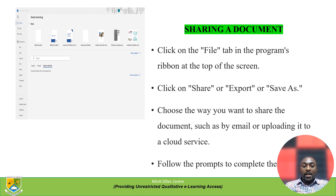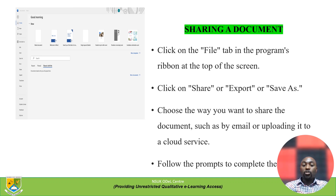To share a document, click on the File tab in the program's ribbon at the top of the screen, navigate to Share, and click on Share or Export, or you can use Save As. Then choose how you want to share the document, such as by email or uploading to a cloud service, and follow the prompts to complete the process.